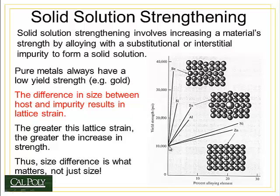Imagine pure copper with a yield strength of about 10,000 psi, or about 69 MPa. When I add zinc — which has a small difference in atomic radius — we see very little change in strength. The reason is that zinc distorts the lattice very little, so as a dislocation travels by, it barely notices the zinc impurity atom. If I add tin, I'm inserting a much larger atom which distorts the lattice significantly. As a dislocation comes by, it interacts with the strain field surrounding that impurity atom and is repelled — much like in strain hardening — except this time the dislocation is repelled by an impurity atom. The dislocation is locked in place and can't move, which means the metal is stronger.